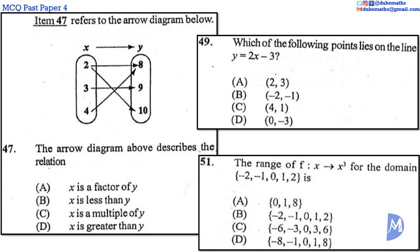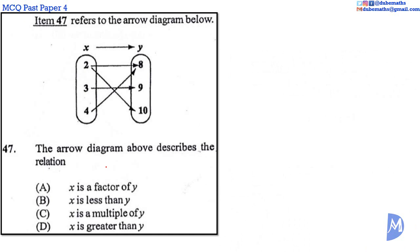Okay, let's go. Question 47. The relation shows 2 mapped unto 8, 2 mapped unto 10, 3 mapped unto 9, and 4 mapped unto 8.